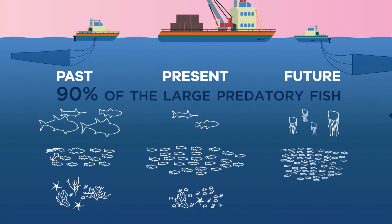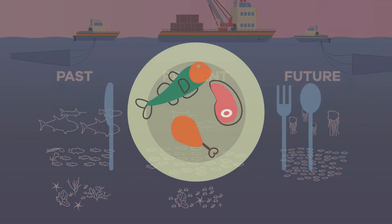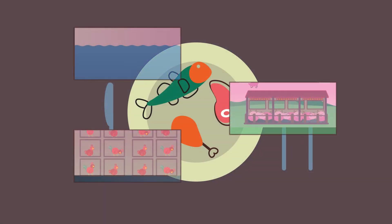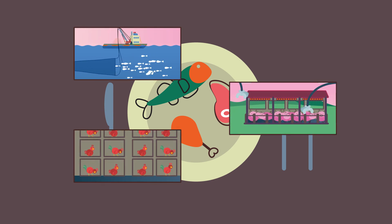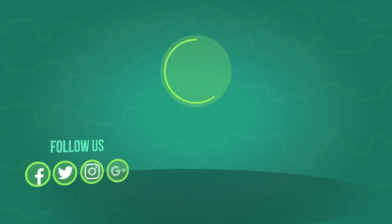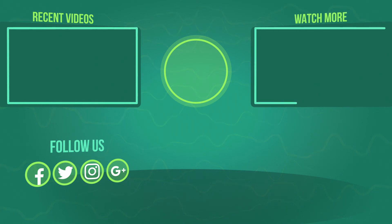Modern fishing techniques have led to overfishing and have had a dramatic impact on aquatic ecosystems. 90% of the large predatory fish that used to live in the oceans are now gone. So the next time you have a meal, think about where your food has come from and how the processes involved in making it have impacted the environment.